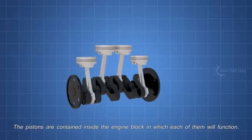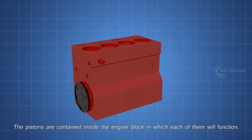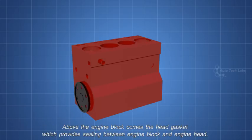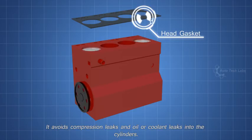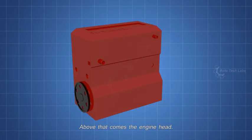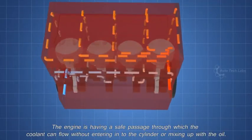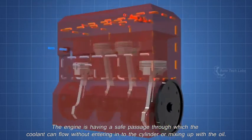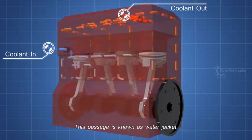The pistons are contained inside the engine block, in which each of them will function. Above the engine block comes the head gasket which provides sealing between engine block and engine head. It avoids compression leaks and oil or coolant leaks into the cylinders. Above that comes the engine head. The engine is having a safe passage through which the coolant can flow without entering into the cylinder or mixing up with the oil. This passage is known as water jacket.